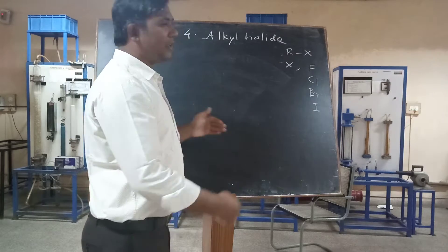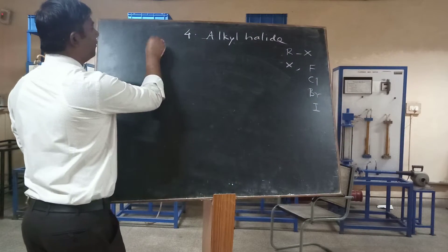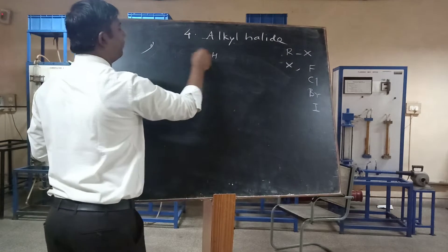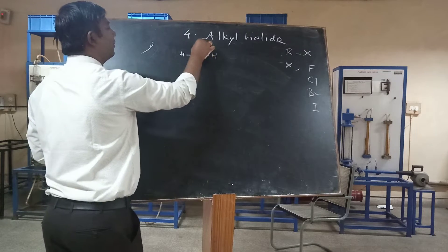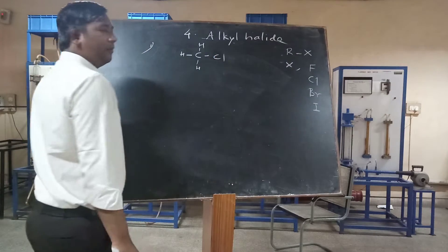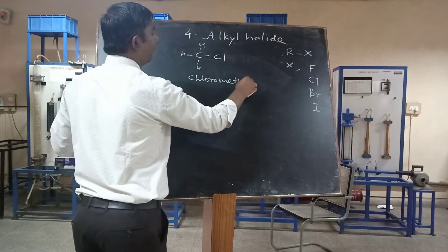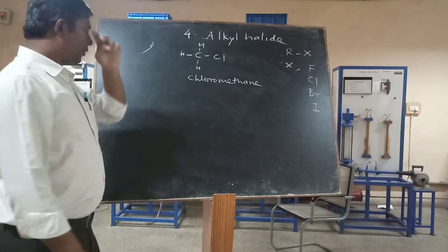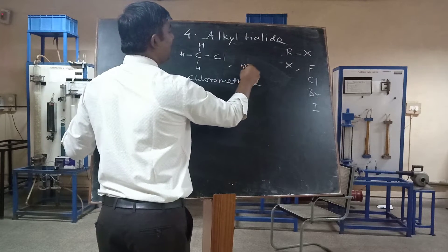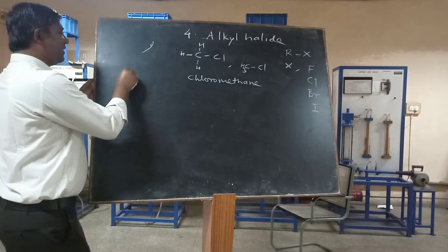Alkyl halides are compounds formed by the fusion of an alkyl group and a halogen. For example, if we take methane (CH4) and replace one hydrogen by chlorine, we get chloromethane. This is represented as CH3Cl.